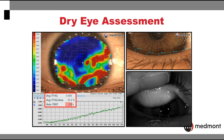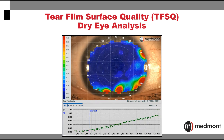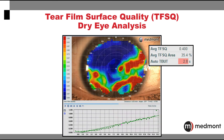The Medmont Meridia is not just an amazing corneal topographer — it's also now a dry eye assessment tool that provides a full range of assessment options for your dry eye practice. The tear film surface quality assessment provides a very precise understanding of the quality of the tear film in between blinks. One of its principal functions is to provide you with the non-invasive tear film breakup time determination for each test. Along with other metrics, we can qualify and quantify the patient's dry eye condition.